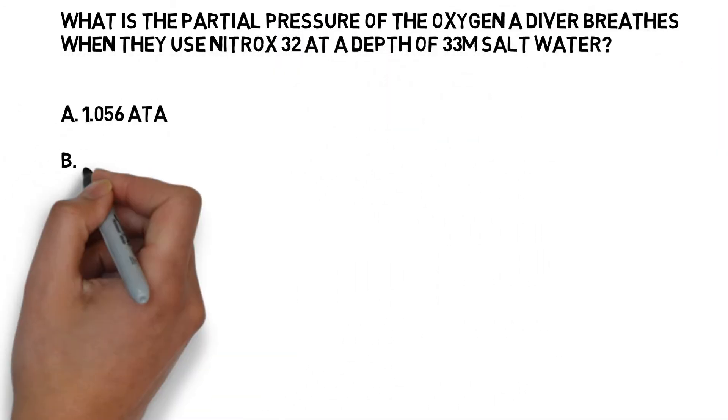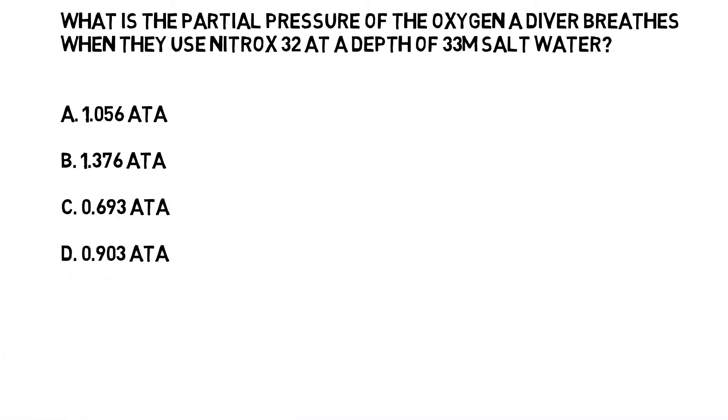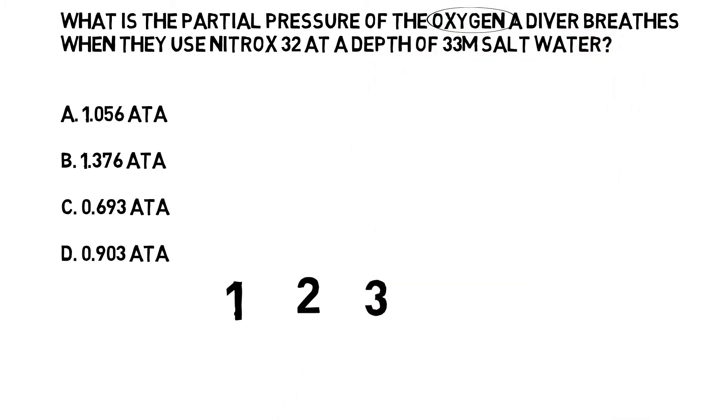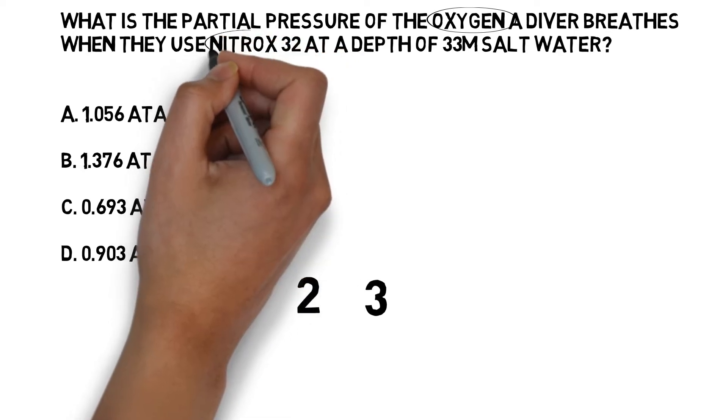In this one, the way the question has been changed subtly is that the diver is breathing nitrox 32, not air. So you need to know a little bit about nitrox. Basically, the number after the word nitrox tells you the percentage of oxygen in the blend.